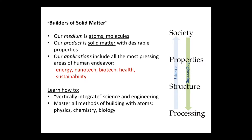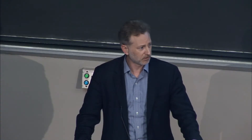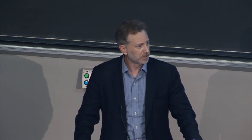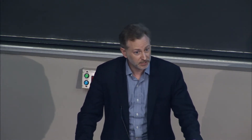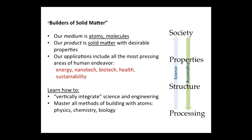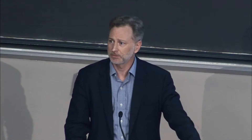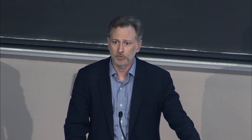What do we do? As freshmen, particularly in 3091, you're understanding a bit more about material science and engineering. Among all the engineering disciplines, material science and engineering is arguably the most fundamental. Many of you coming in know what electrical or mechanical engineering is and what those engineers build, but underlying all these disciplines are the materials that engineers use to build their solutions. The limitations of what we can do are largely controlled by the properties of the materials making up those solutions — but also the opportunities derived from the properties of materials we can engineer.